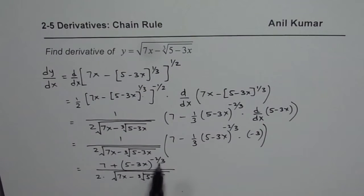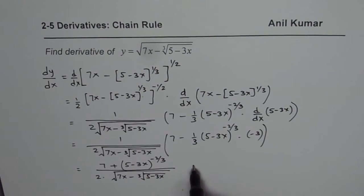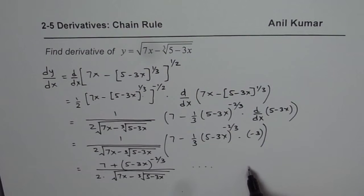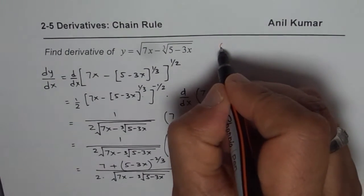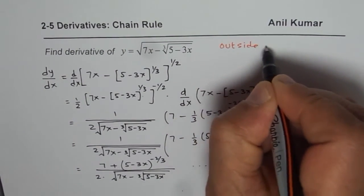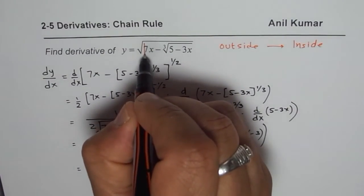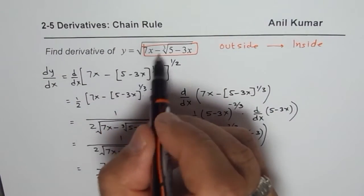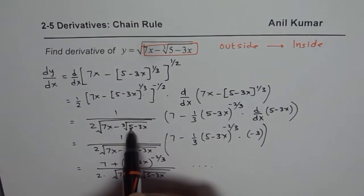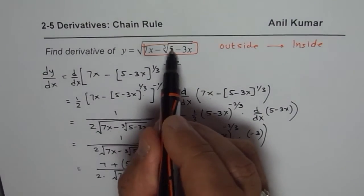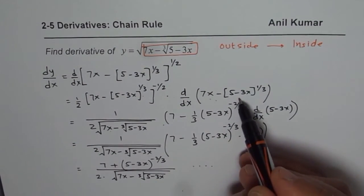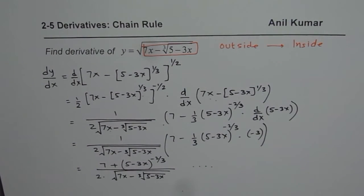You could actually do further simplification. But the idea here is that whenever you are doing chain rule, how should you solve? You should always start from outside and then move inside. That is the strategy. So in the first part, we found derivative of this block. Square root of this block is 1 over square root of that block times derivative of inside function. Do you see that? And that is how we move from outside to inside. If you follow this strategy, you should be in a position to get all your questions very easily. Thank you and all the best.